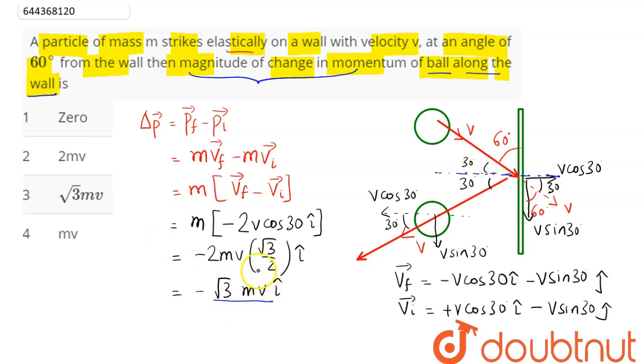Hence we can say here change in momentum along the wall, that is along Y axis, is zero. Hence we can say option number 1, that is zero, is the correct answer. So zero is our answer.